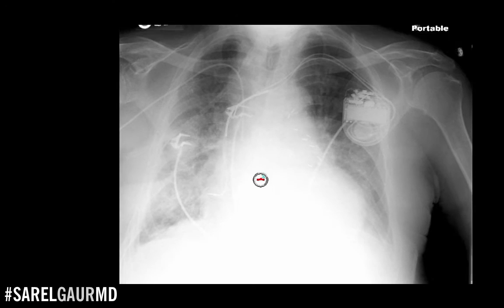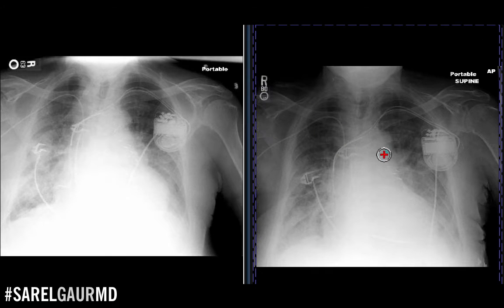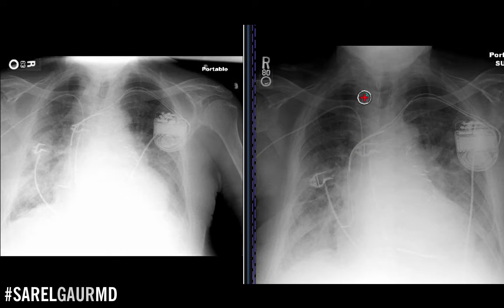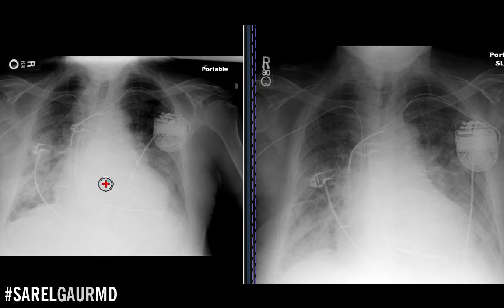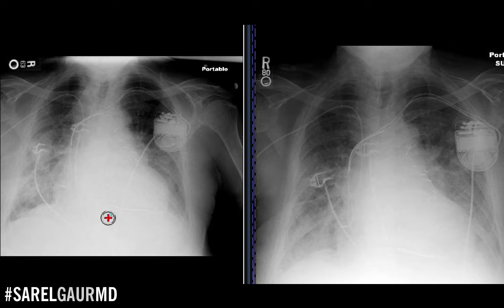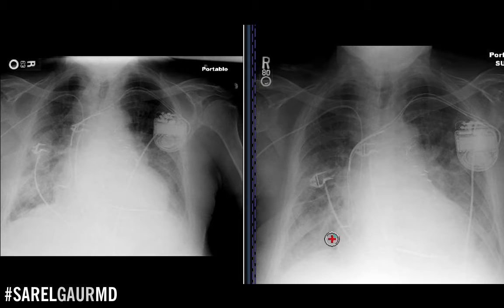Now I'm going to compare with the prior exam. I have a prior study here on the right. Basically the question is whether the failure is better, worse, or the same. Basically stable bilateral lower lobe parenchymal opacities with bilateral at least moderate pleural effusions — no significant interval change.